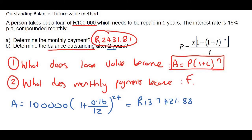So that is what the loan would be worth. If you never made any payments, you would walk to the bank after two years. And the person at the bank would be like, hey, you haven't been paying. Well, guess what, sir? Look at how much your loan is now worth. You now owe us 137,000 Rand, 421 Rand and 88 cents. Okay, so guys, don't be that person one day. So that's number one done.